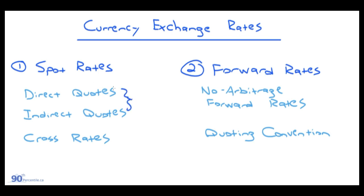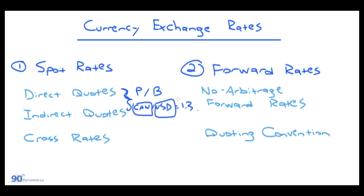Direct quotes are just talking about the way currency rates are displayed in the market. Direct quotes would be a price currency to a base currency — the price currency first and the base currency second. As a quick example, Canadian dollar to USD equals 1.3, meaning 1 USD equals 1.3 Canadian dollars. An indirect quote is the reciprocal — 1 over 1.3 — to find how many USD equal 1 Canadian.